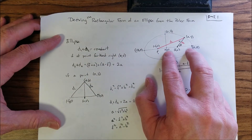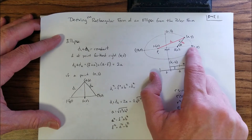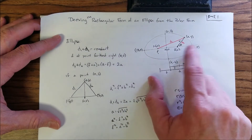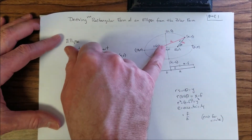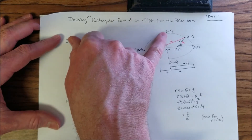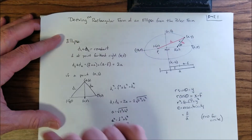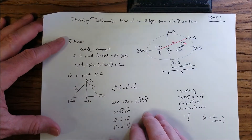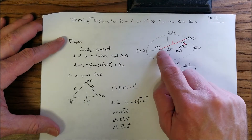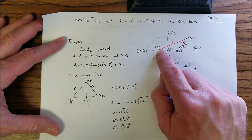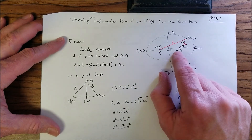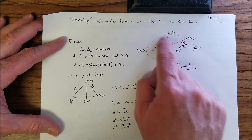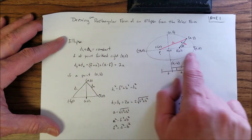A is the length of the semi-major axis — from the origin to the farthest point — and b is the length of the semi-minor axis. Using the definition that the distance from focal point one to a point on the ellipse to the other focal point is constant, let's take two extreme points and set them equal to each other.